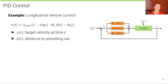But at least it's a starting point. Let's look at some more concrete examples of how a PID controller could be used in the context of controlling a vehicle. Let's first have a look at longitudinal vehicle control, which means controlling the speed of the vehicle.